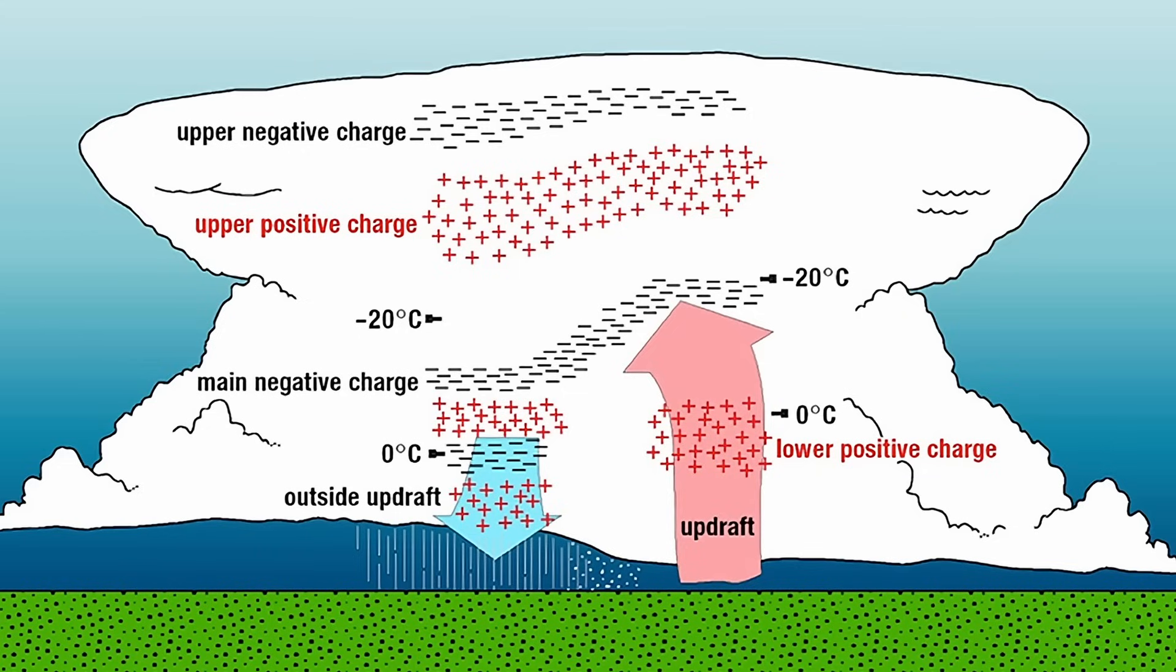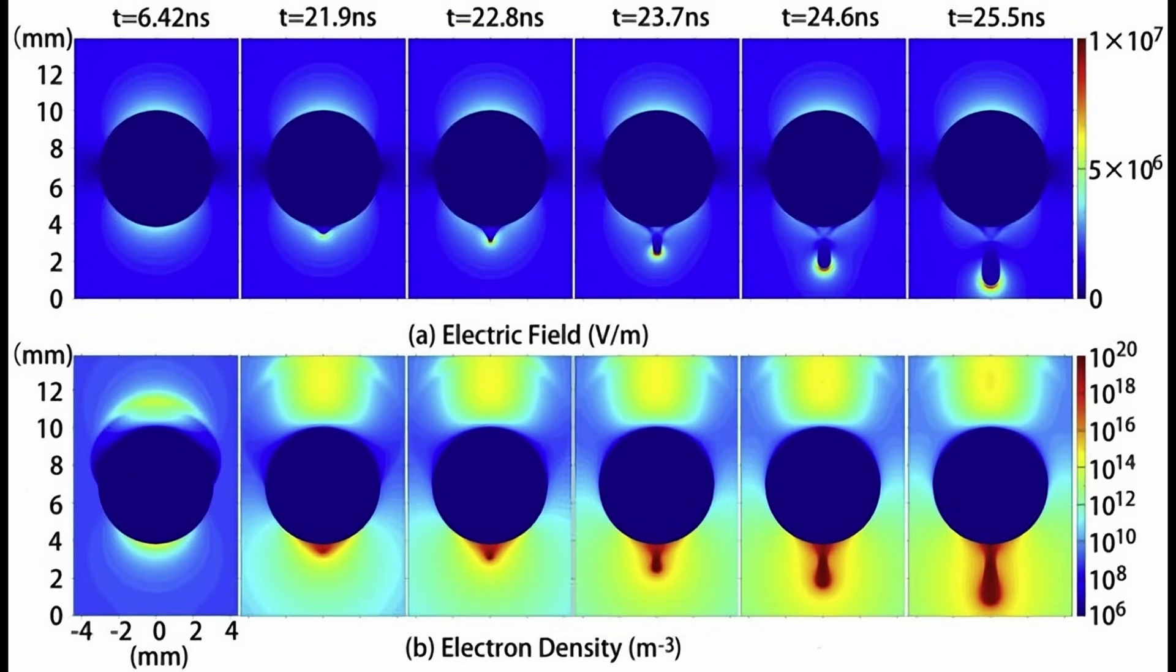The charges on these particles and the polarization of water contribute to enhancing the electric field in the vicinity of the hydrometeor's surface. Individual hydrometeors have been observed to occasionally carry charges of up to 40 picocoulombs. There is a maximum charge limit for a raindrop before the electrostatic force exceeds the surface tension, causing the drop to break apart.